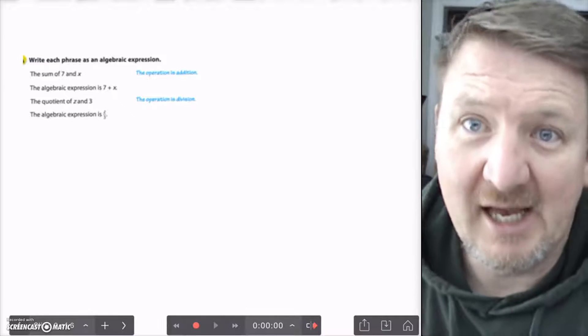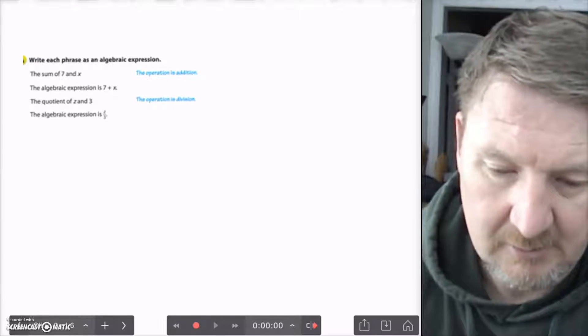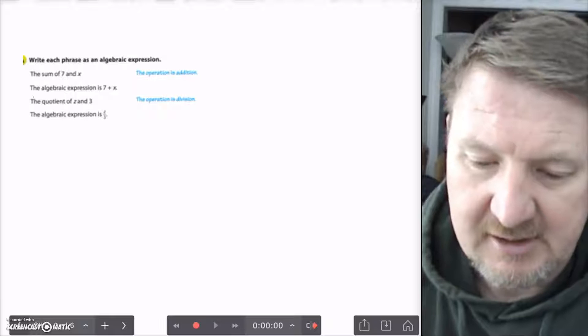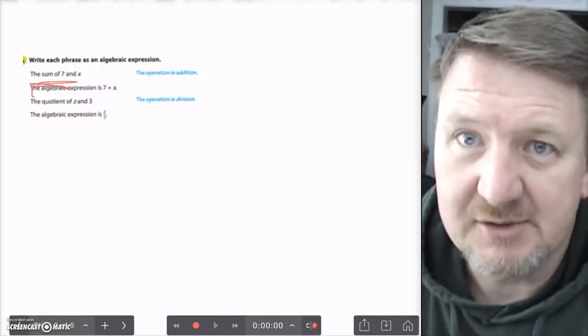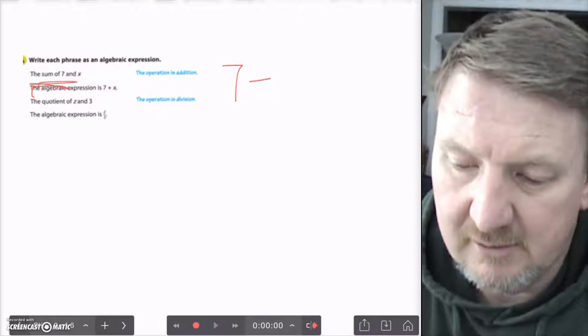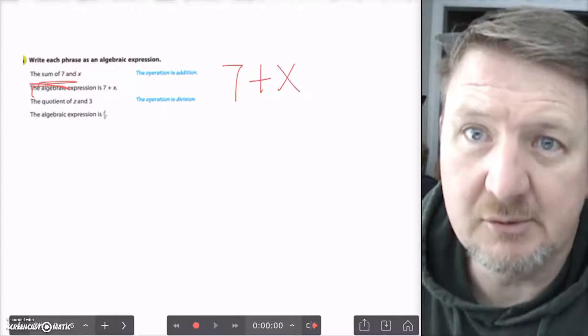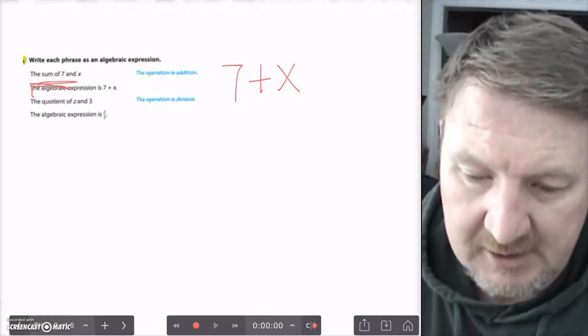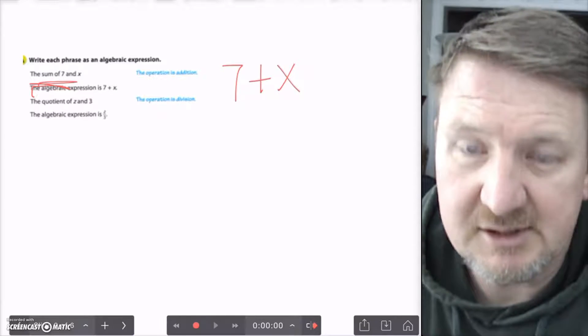So, it says write each phrase as an algebraic expression. It says the sum of 7 and x. Sum means to add. So, you would say 7 plus x. It's that simple. The algebraic expression is 7 plus x.